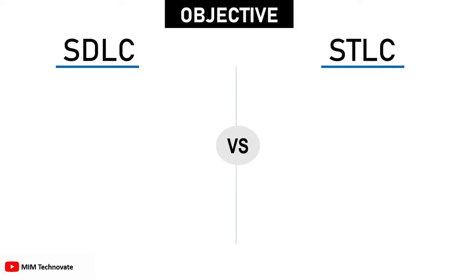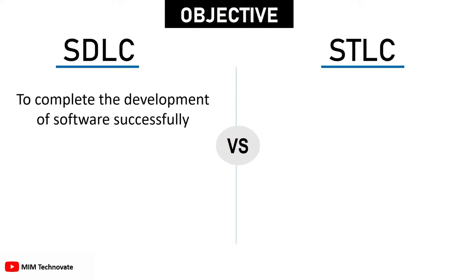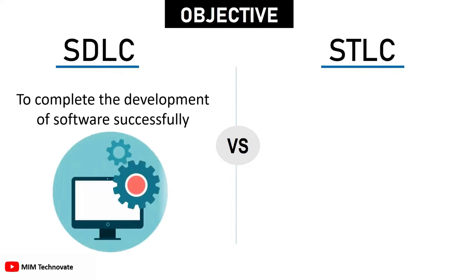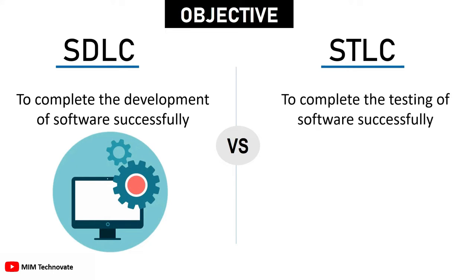Objective: The objective of the Software Development Life Cycle is to complete the development of software successfully. While the objective of the Software Testing Life Cycle is to complete the testing of software successfully.